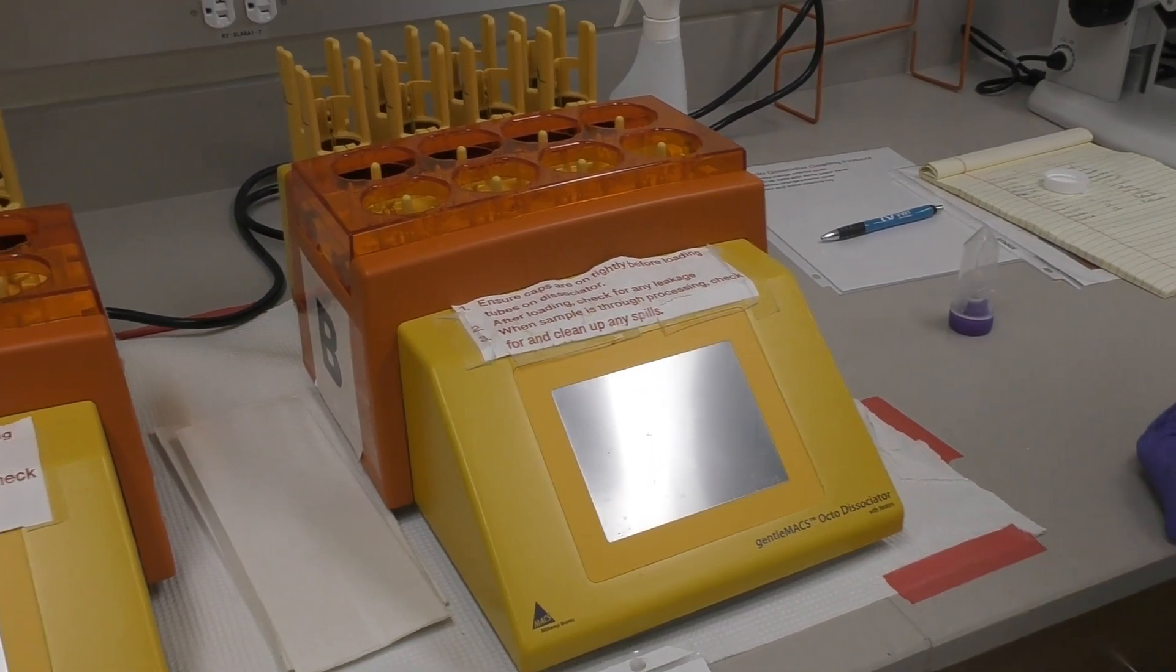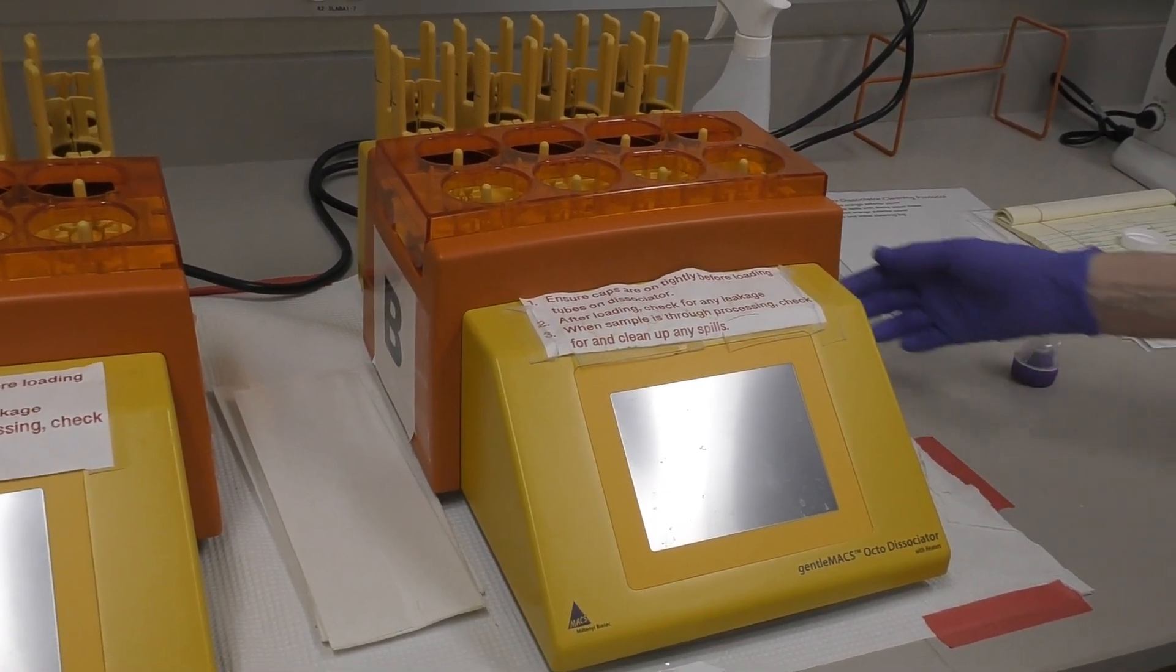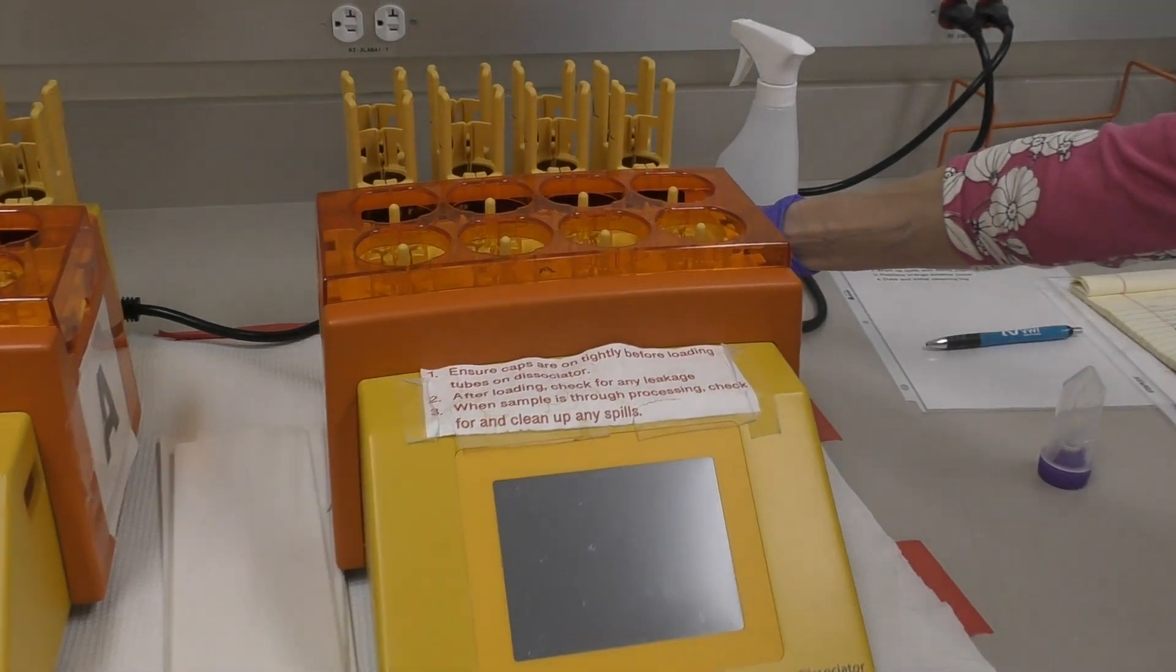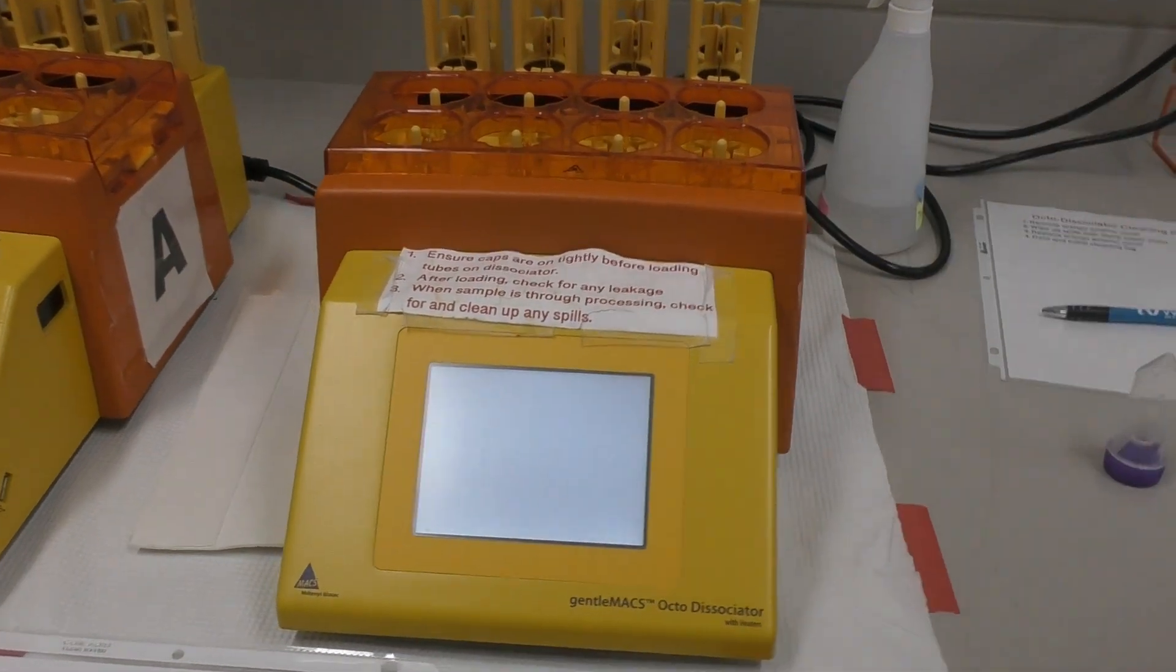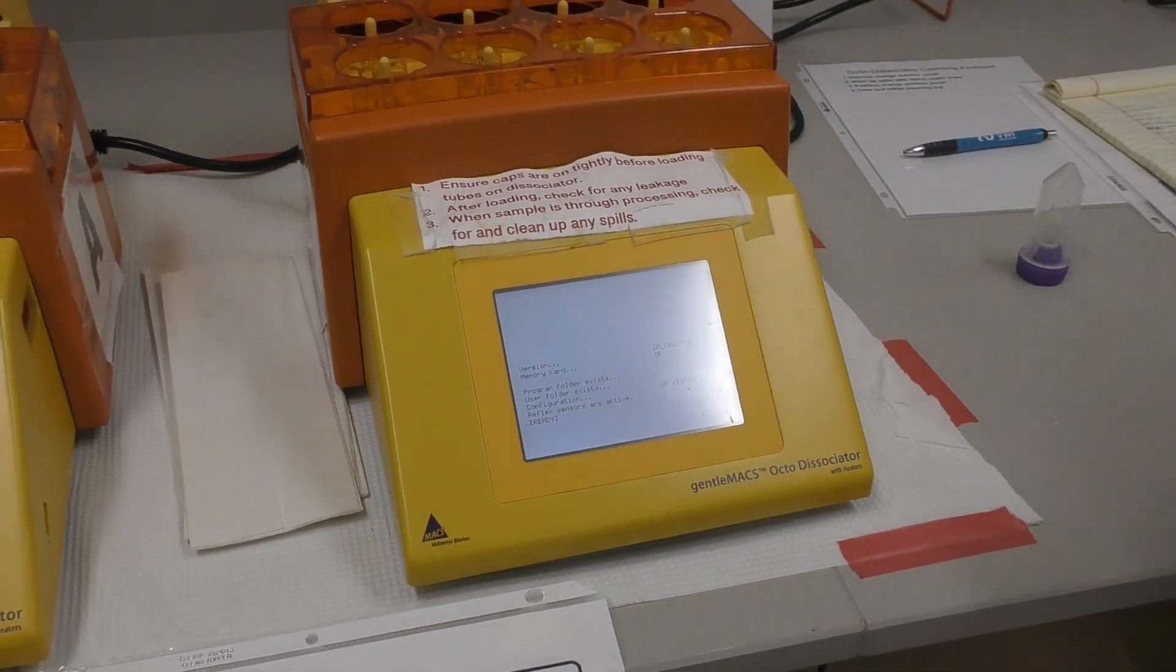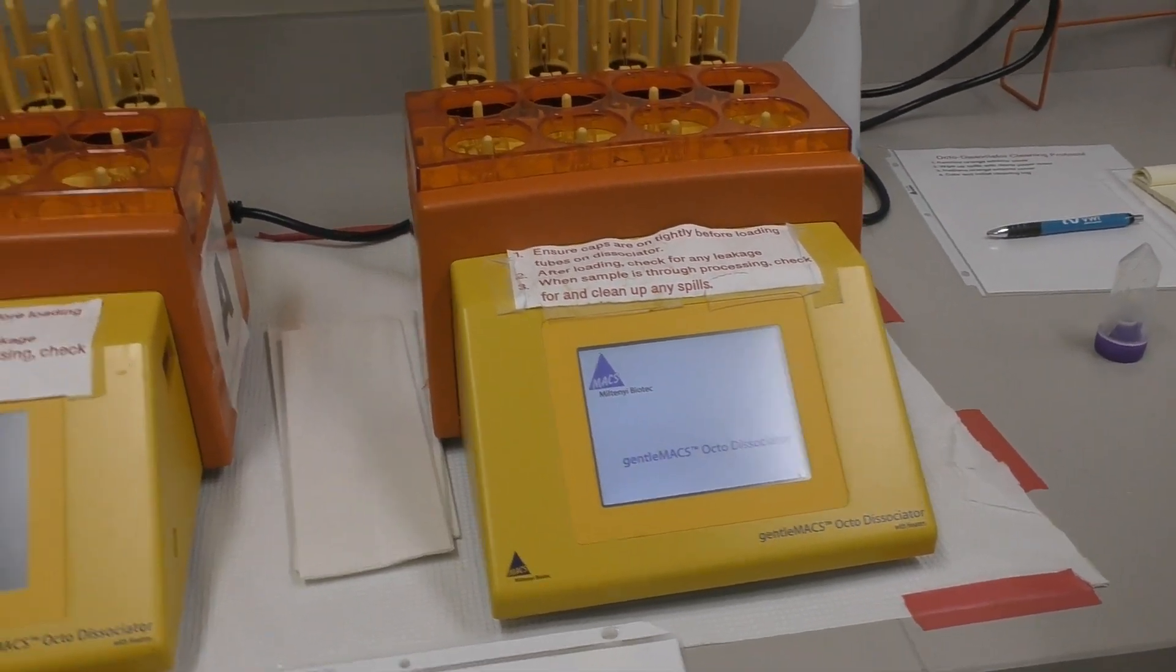This is the operation of the Gentlemax Octo Dissociator. First, turn the instrument on with the switch at the back. The screen will come up and display the menu.